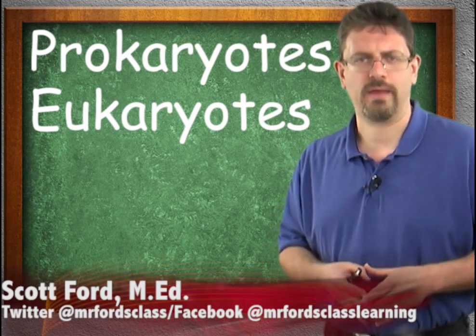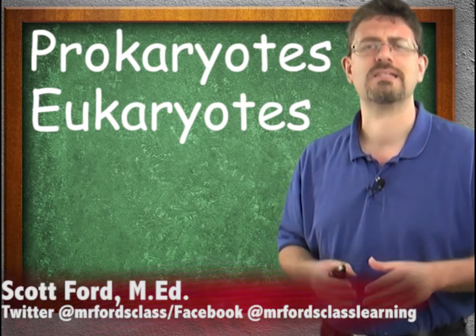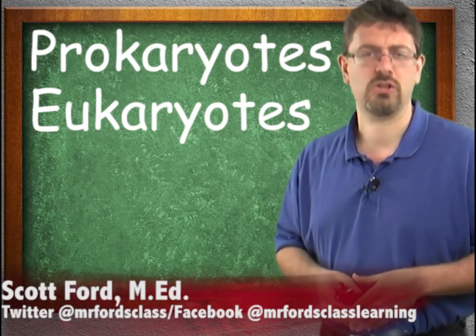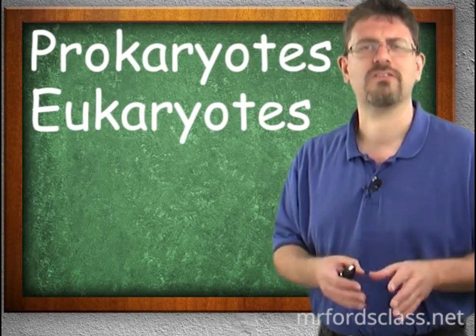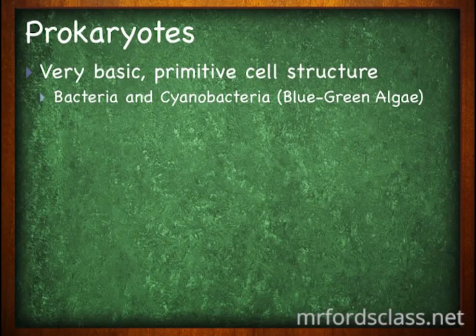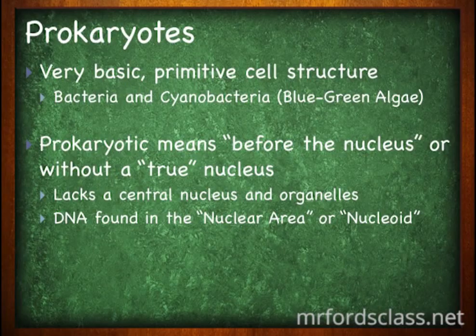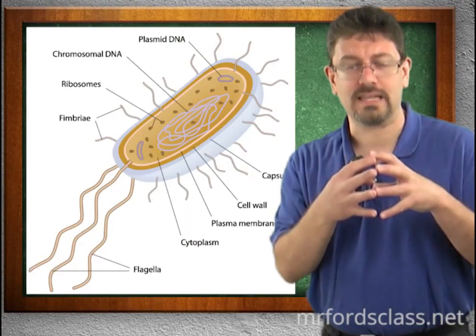I'd like to take a brief moment and talk about the two major categories of cells. We have prokaryotes and we have eukaryotes. Prokaryotes are things like bacteria and blue-green algae. They lack a true nucleus — in other words, they lack a separated membrane-bound central area where the DNA and the genetic material live.